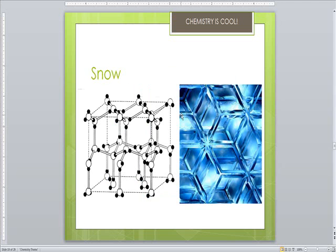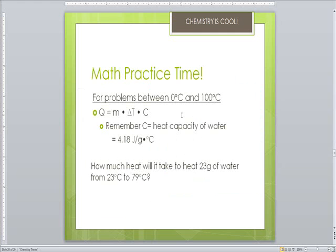And you can see that crystalline lattice structure in the structure of snow, and this is a graphical representation as well as a picture of a micrograph of snow. Okay, so we're going to practice this one. Hopefully you have your printout of your notes. So for problems between 0 degrees and 100 degrees Celsius, you're not dealing with the heat of vaporization or the heat of fusion. So you just use q equals m delta T times c. Remember, c is the heat capacity of water, q is the heat, and the heat capacity of water is 4.18 joules per gram degree Celsius.